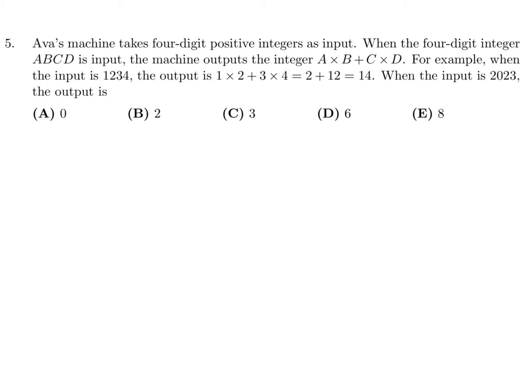Ava's machine takes four-digit positive integers as input. When the four-digit integer ABCD is input, the machine outputs the integer A times B plus C times D. For example, when the input is 1234, the output is 1 times 2 plus 3 times 4, which is 14. When the input is 2023, the output is 2 times 0 plus 2 times 3, which is 0 plus 6, which is 6. Number 5, the answer is D.